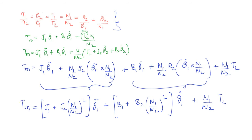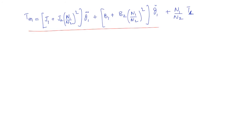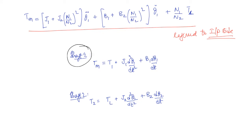From this equation, the input torque Tm is expressed directly in terms of the load torque Tl, without needing the intermediate torques T1 and T2. We got the expression directly in terms of the input torque and output torque of the entire gear system. This is the equivalent torque equation referred to the input side, i.e., referred to gear 1. We took the shaft 1 equation, expressed T1 in terms of T2, N1, and N2, then substituted the shaft 2 equation.